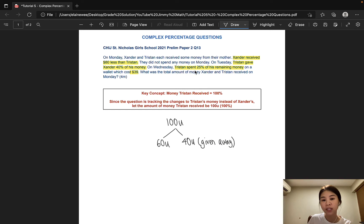On Wednesday, Tristan spent 25% of his remaining money on a wallet which cost $39. So let's deal with the 25% first. His remaining money is here. So I'll just put an R to represent remainder.